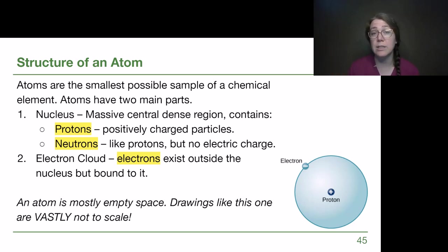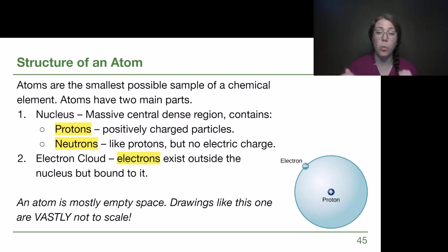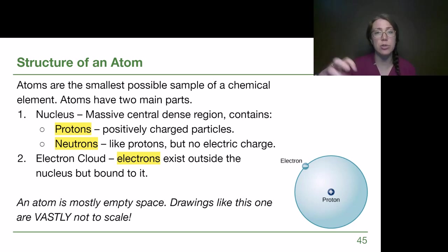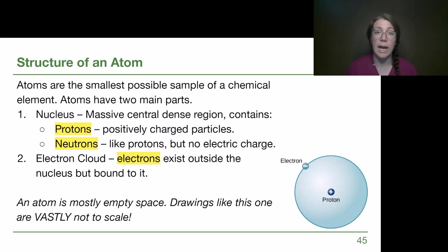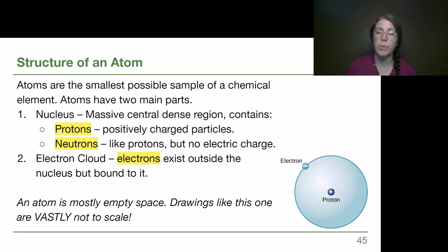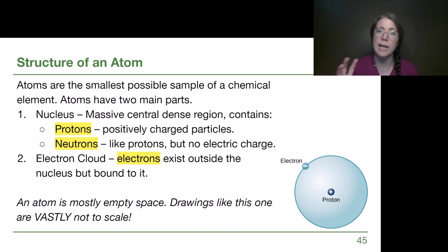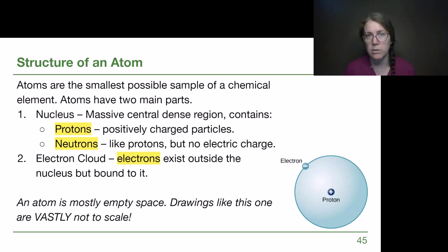Neutrons do create different versions of elements called isotopes. Hydrogen-1 is what we're showing here, but if we had an extra neutron attached, it would be a little bit heavier — that would be hydrogen-2, a different version of hydrogen. Then the electron cloud is where we find electrons. There's a statistical understanding of where they're likely to be; they aren't necessarily in just one place at once.